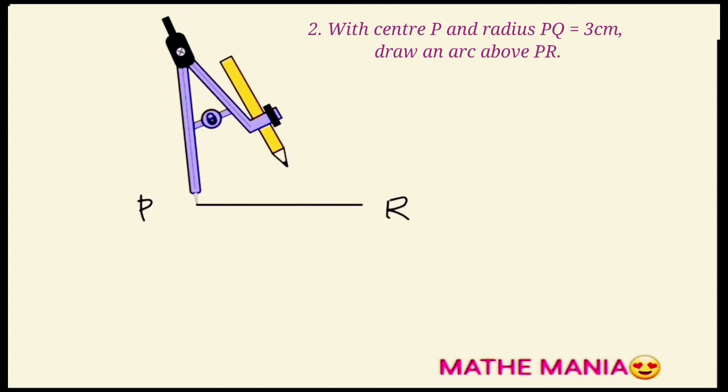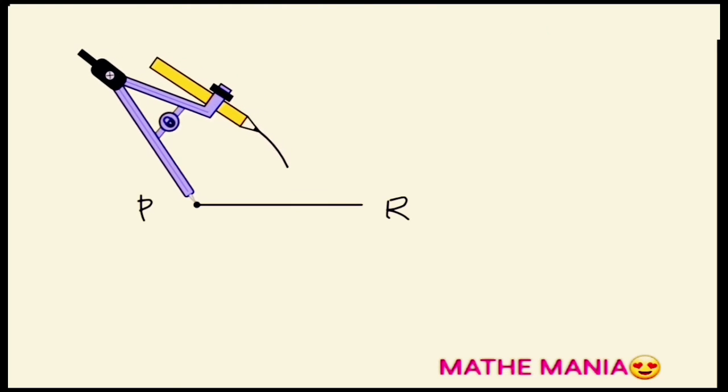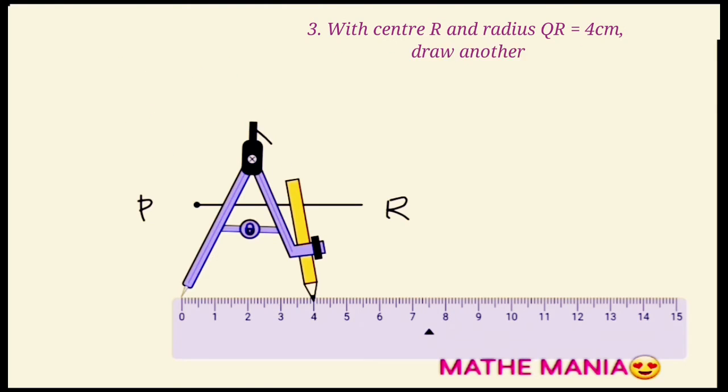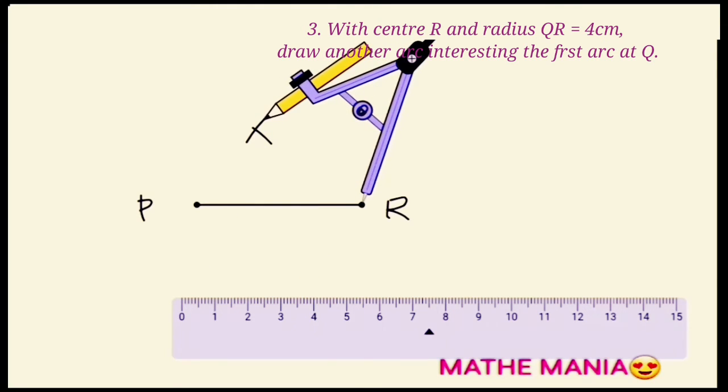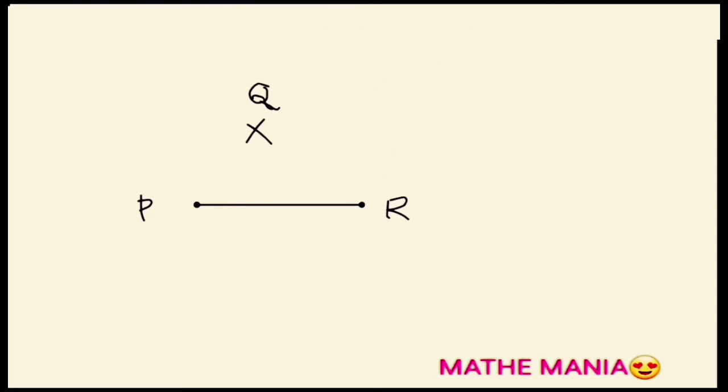Taking P as center, we will draw an arc above PR. Similarly, taking QR equal to 4 cm as radius, we will draw another arc intersecting the first arc at point Q. Q is the point of intersection of arcs.